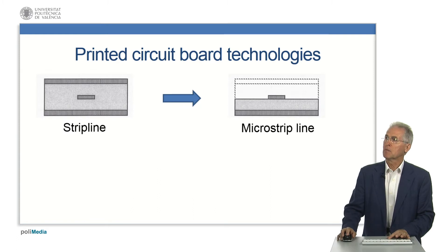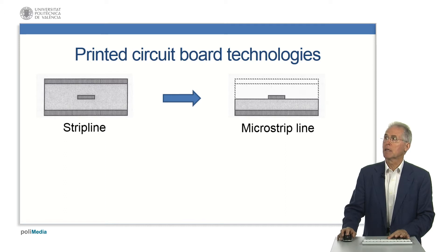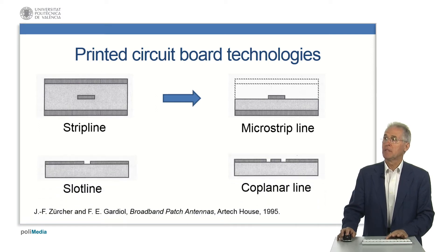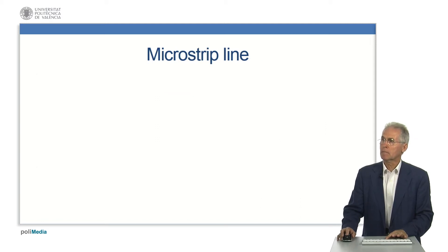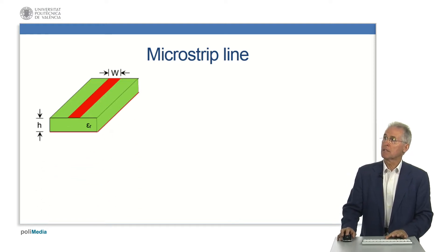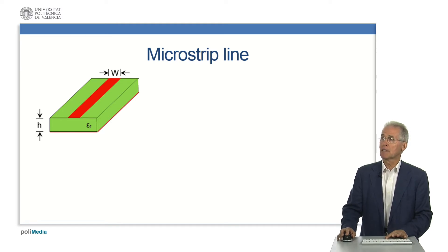Microstrip is one of the printed circuit board technologies used to fabricate microwave antennas and circuits. It originated in the strip line. There are other PCB technologies such as the slot line and the coplanar line. The microstrip line consists of a metallic strip with width W printed on a dielectric substrate with relative permittivity Epsilon R and thickness H, backed by a metallic ground plane.